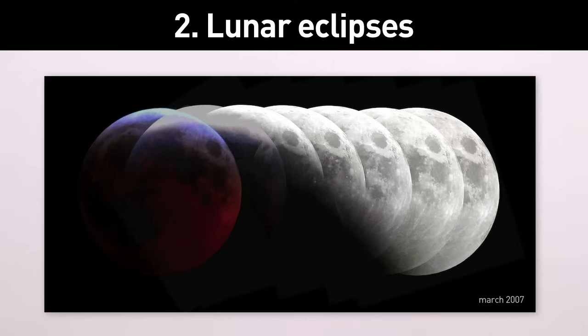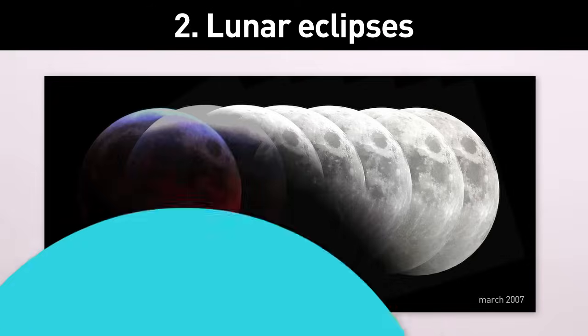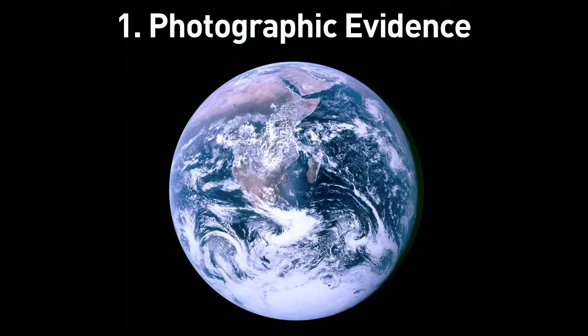2. During a lunar eclipse, the shadow of the Earth on the Moon is curved. And number one, we know the Earth is round because we have photographic evidence.